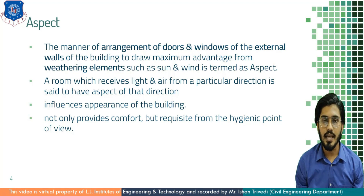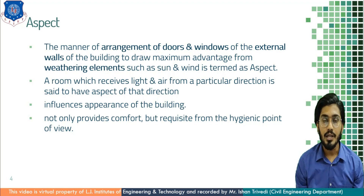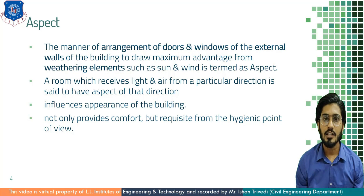For example, if I place a kitchen in the east direction, in the morning when I open the window I receive sunlight in the kitchen, which kills the germs and bacteria — that is the aspect of that direction. In building elements such as kitchen, storeroom, bedroom, and living room, the intensity of light would vary, and based on that the aspect of each component of a building is determined.